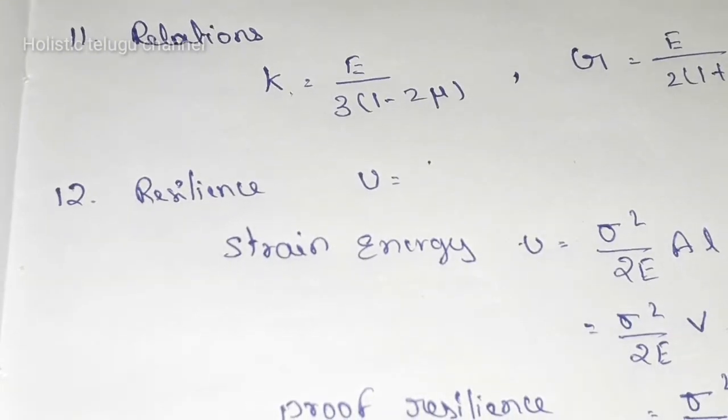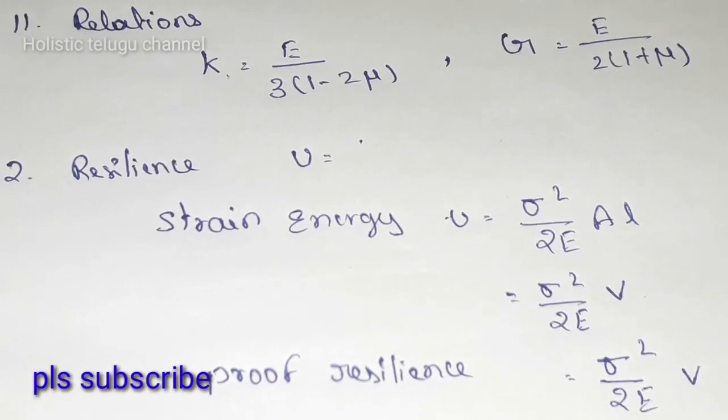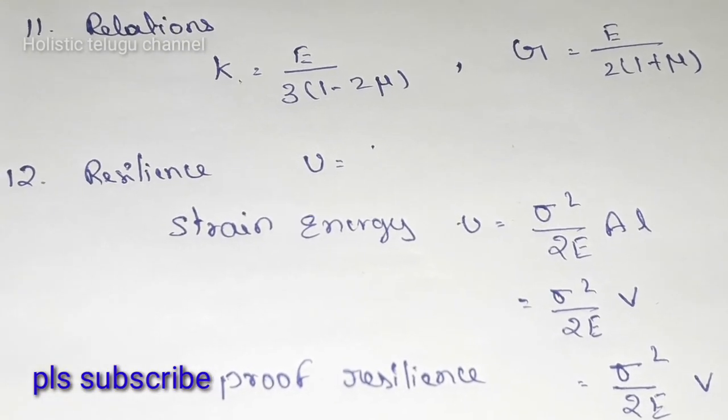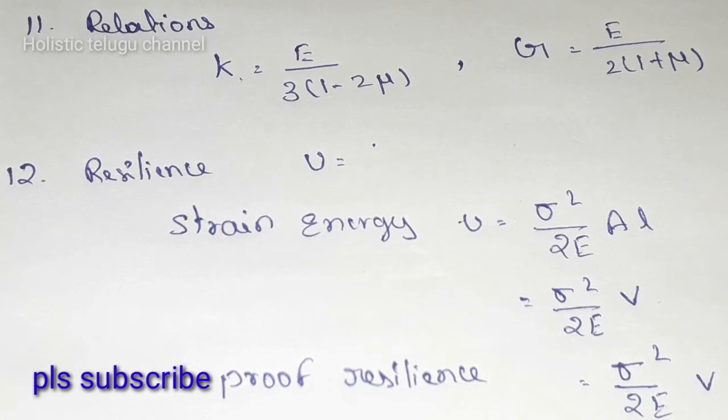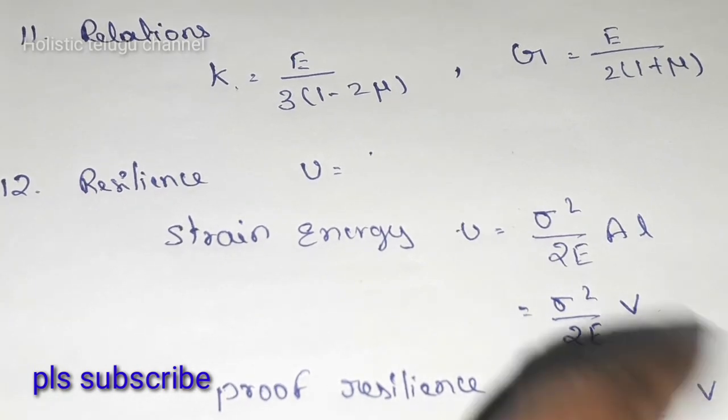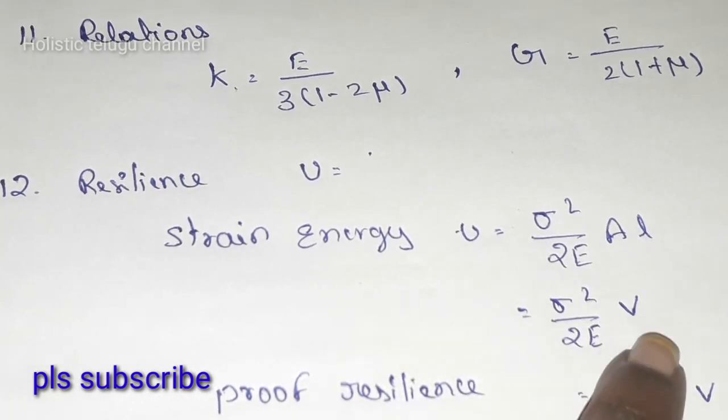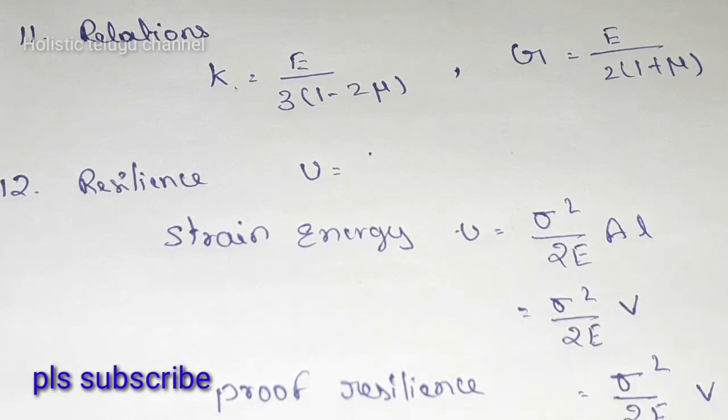Next, resilience. Strain energy equals U equals pi square by 2EAL. AL value equals area into length, so pi square by 2Ev.